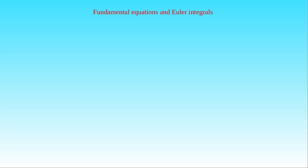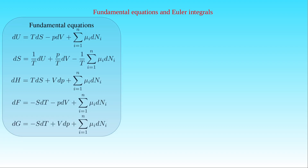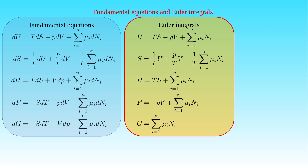We can now compare the fundamental equations in thermodynamics with the Euler integrals. Here we see the five fundamental equations, where the first two are equivalent to each other. In these equations, the differentials of the thermodynamic potentials are expressed as functions of the differentials of their natural variables. We also show the Euler integrals supplemented with the Euler equation solved for the entropy S. These expressions present the thermodynamic potentials as functions of their natural variables.